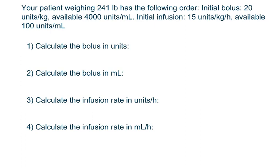The first step is to convert the weight. 241 divided by 2.2 gives 109.54, which rounds to the tenths, giving 109.5 kilograms.